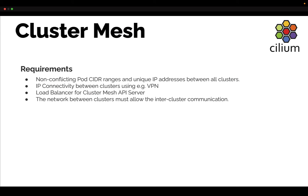In order to be able to run ClusterMesh across your Kubernetes clusters, it's important to consider the following requirements. First of all, you need non-conflicting pod CIDR ranges and unique IP addresses between your clusters. You also need IP connectivity between your clusters using, for example, a VPN. What's important here is that the nodes are able to communicate with each other across clusters.